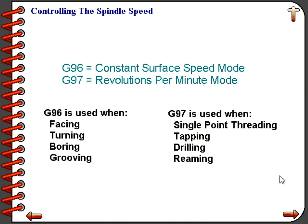Deciding on when to program the machine in constant surface speed mode G96, or in revolutions per minute mode G97, is sometimes confusing for the beginning programmer. Generally speaking, you would use G96 whenever the tool will be cutting at different diameters, as in the case of facing operations, turning operations, boring, and grooving operations. You would select revolutions per minute mode with the G97 command when you are performing single point threading, tapping, drilling, and reaming — generally whenever you are cutting at a constant diameter.